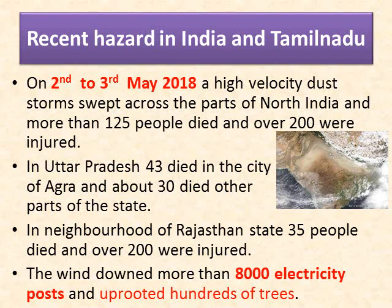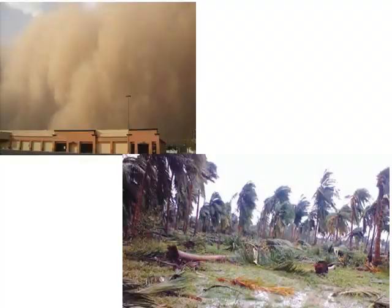The most damage and fatalities were associated with high winds rather than the dust itself. The picture shows a dust storm forming above a building, and you can see the effect of wind and uprooted coconut trees. Now, coming to Tamil Nadu — after the 2004 tsunami, Cyclone Gaja is considered the first major natural disaster to hit Tamil Nadu.